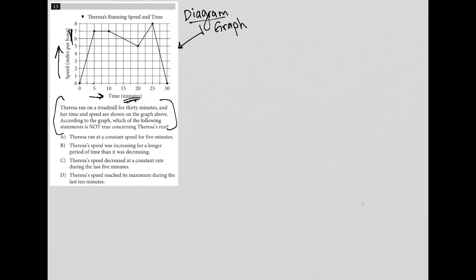So at five minutes, for instance, Teresa is running at seven miles per hour. At 10 minutes, she's also running at seven miles per hour. But then at 20 minutes, she's dipped down to looks like five miles per hour. Okay, so that's how we read the graph itself.